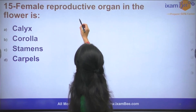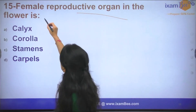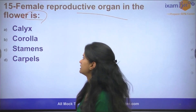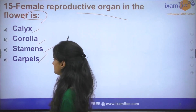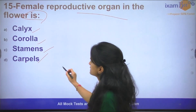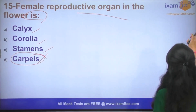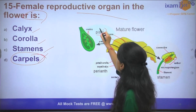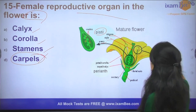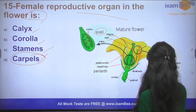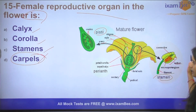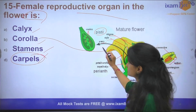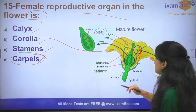Question number 15: The female reproductive organ in the flower is called what? Is it calyx, corolla, stamen, or carpel? The answer is carpel. Carpels are our female reproductive part, also known as pistil. The pistil has three parts: stigma, style, and ovary. The male part is the stamen, which has two parts: filament and anther. Corolla is the petals part, and calyx is the sepals part.